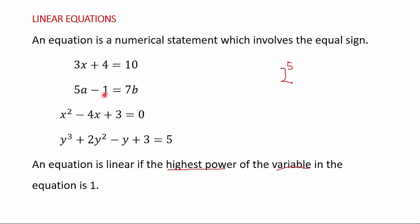Now let's consider 5a minus 1 is equal to 7b. We have two variables here. The power of a is 1 and the power of b is also 1. So the highest power of the variable in this equation is 1, and therefore this equation is also a linear equation.